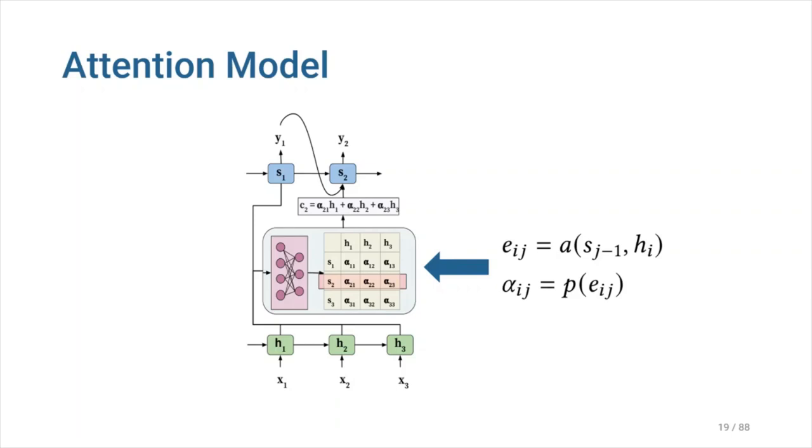Attention weights are learned by integrating an extra feedforward neural network into the architecture. This feedforward network learns special attention weights of alpha ij as a function of two states, hi, candidate state, and sj-1, the query state, which are taken as input by the neural network. This function is called the alignment function, which is denoted by a in this slide.